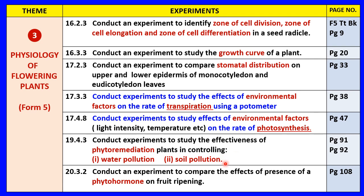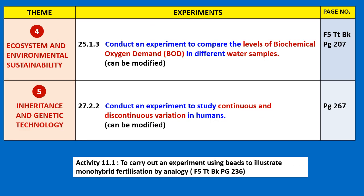Chapter 4 of the Form 5 syllabus includes conducting experiments to study the effectiveness of phytoremediation plants in controlling water pollution and soil pollution — this takes time to do and is not likely for Paper 3 practical tests. Another experiment is to compare the effects of the presence of phytohormones on fruit ripening — this also takes time. Under the theme of Ecosystem and Environmental Sustainability, there is an experiment to compare levels of biochemical oxygen demand (BOD) in different water samples. This can be modified using certain solutions so that the reaction occurs more quickly.